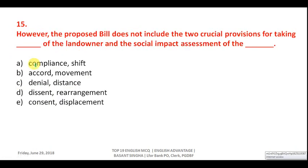Question fifteen: 'The proposed bill doesn't include the two crucial provisions for _____ of the land owner and the social impact assessment of _____.' Social impact assessment relates to displacement, and if you displace somebody you must take the consent of the landowner. Correct answer is E — consent and displacement.